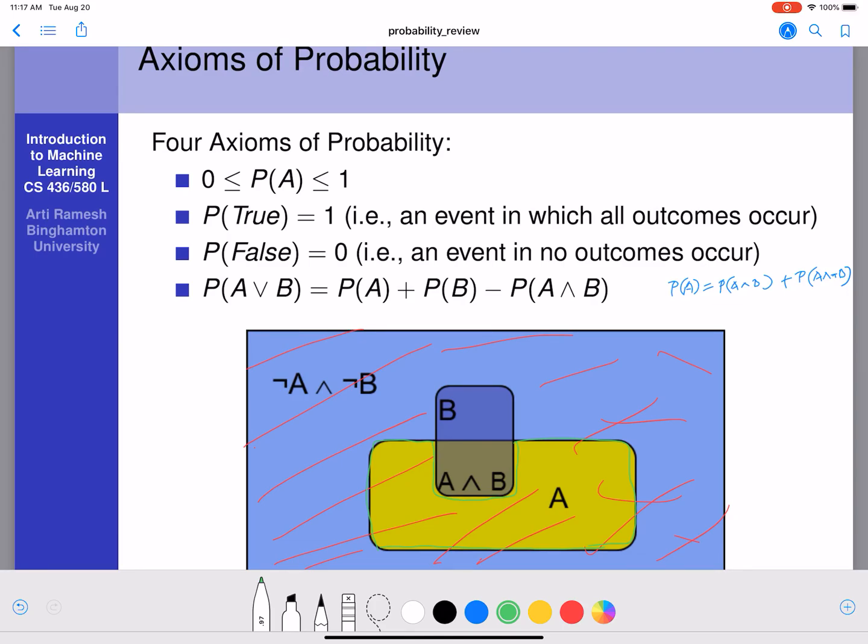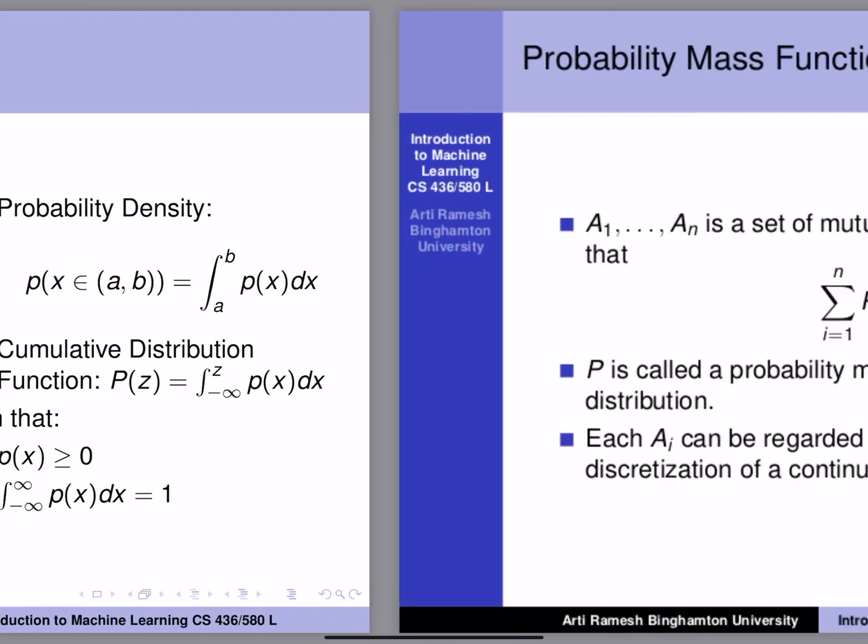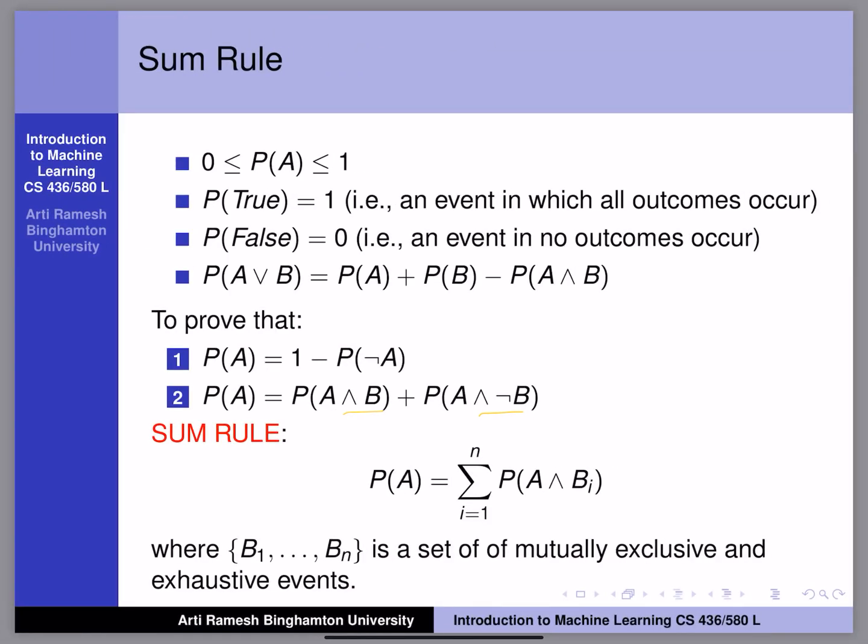So what do we have here? B1 to Bn is a set of mutually exclusive and exhaustive events. That's another thing I forgot to mention. It's not just mutually exclusive, but also exhaustive, which means that it's just like B and not B. So B and not B together are exhaustive or cover all possible events in that space.